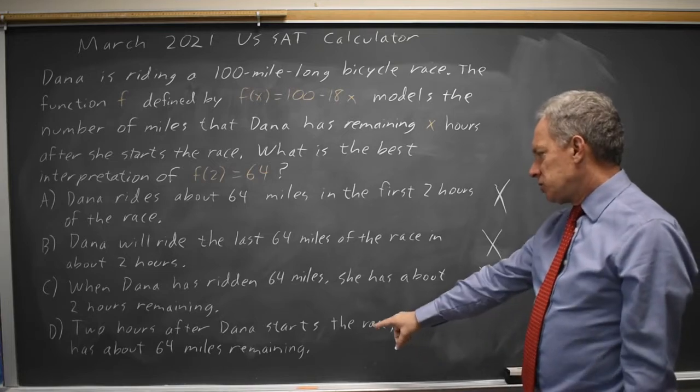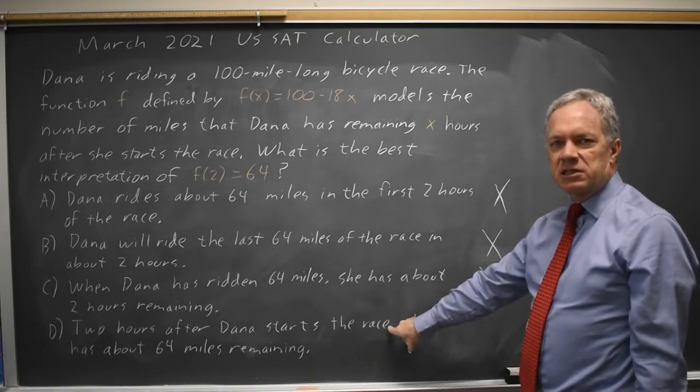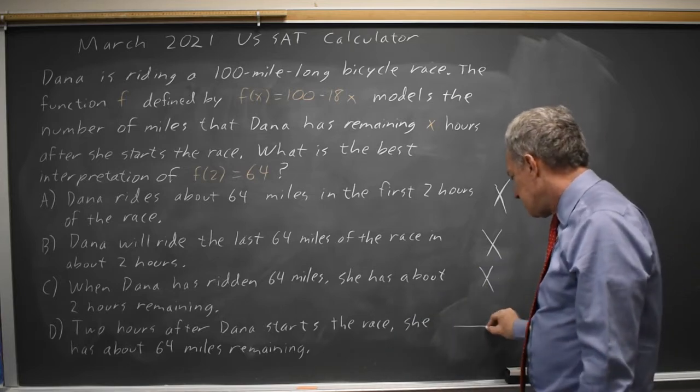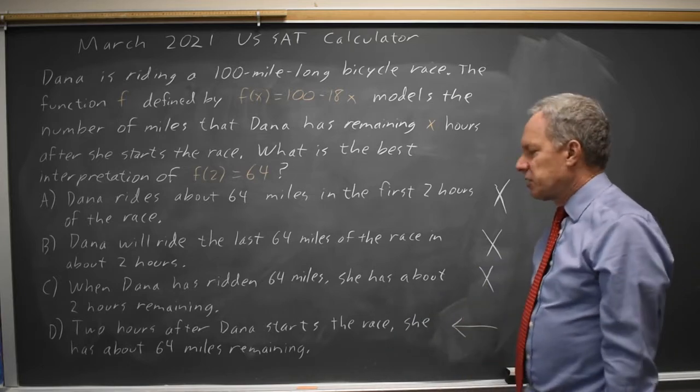And D, 2 hours after Dana starts the race, that's the correct measurement for x, she'll have 64 miles remaining. That's exactly what we identified.